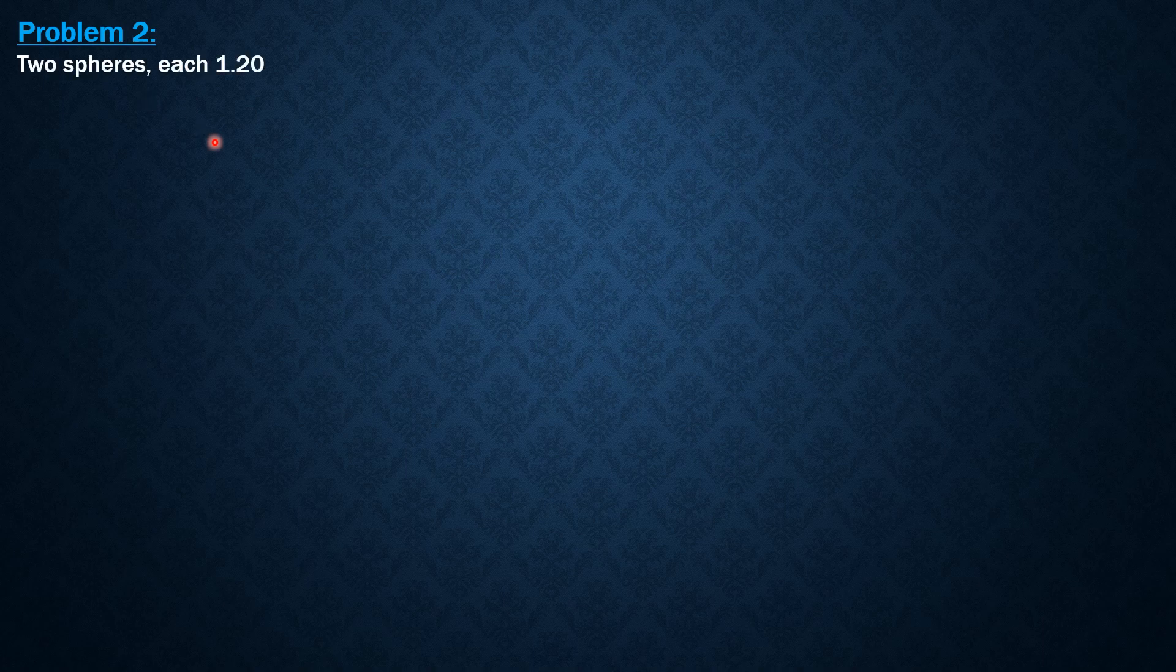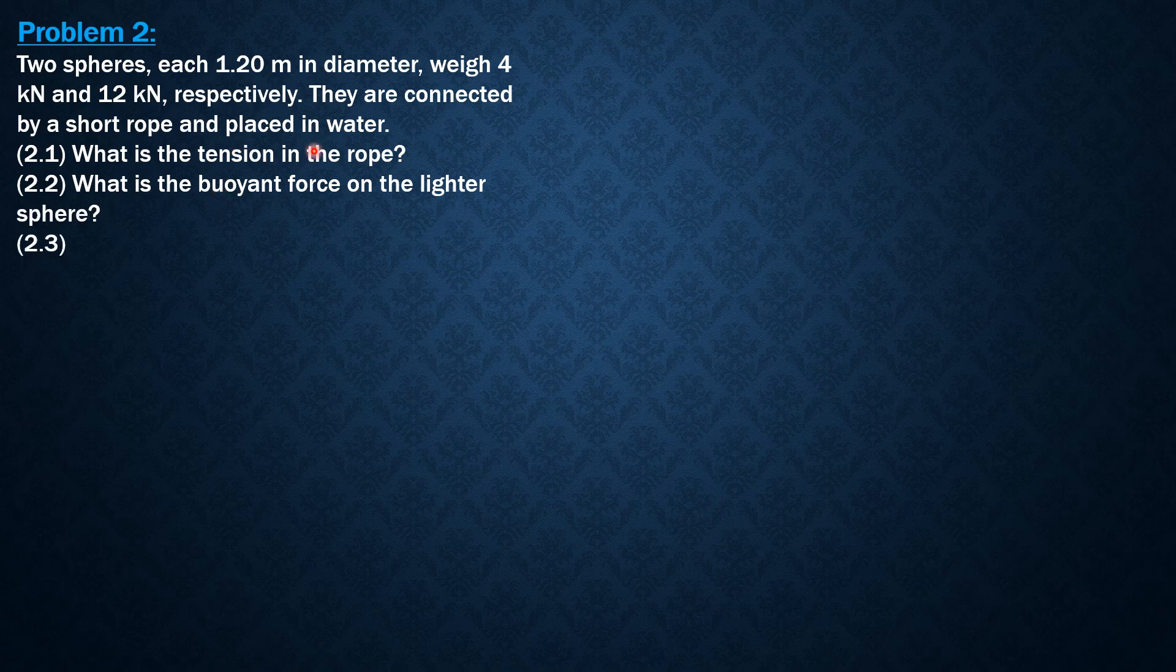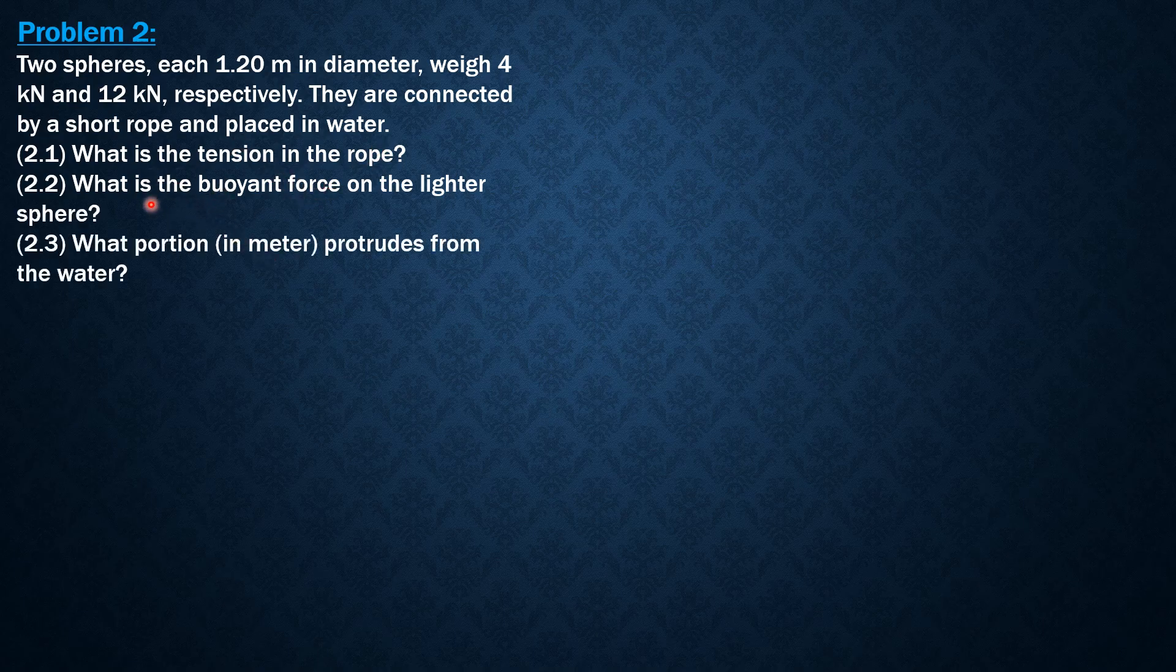And this is the problem. Two spheres, each 1.2 meters in diameter and weigh 4 kN and 12 kN respectively. They are connected by a short rope and placed in water. What is the tension in the rope? What is the buoyant force on the lighter sphere? And what portion in meter protrudes from the water?